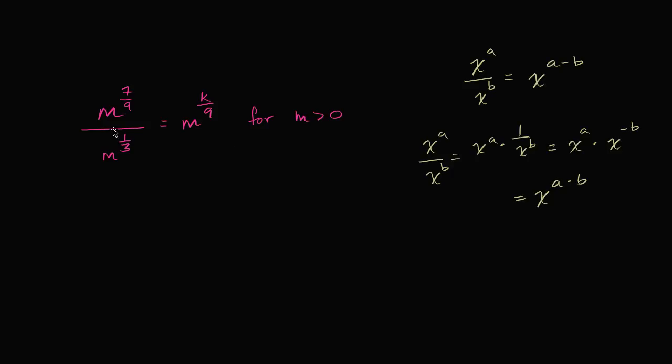So we got to the same place. So we can rewrite this as, we can rewrite this part as being equal to m to the 7/9th power minus 1/3rd power is equal to m to the k over 9. And I think you see where this is going. What is 7/9th minus 1/3rd?